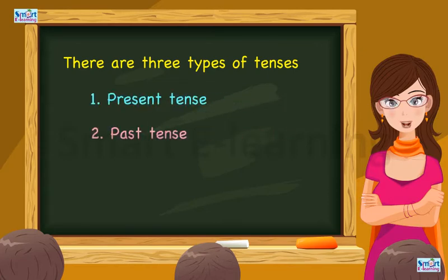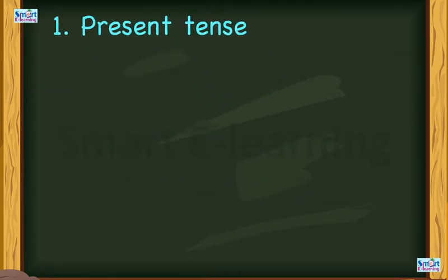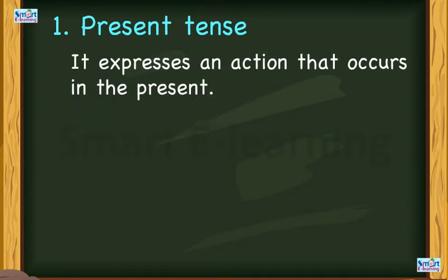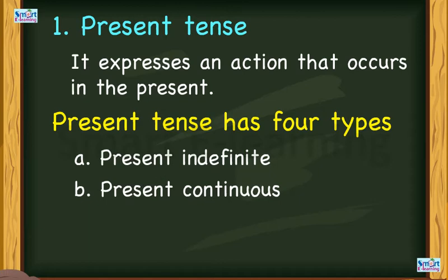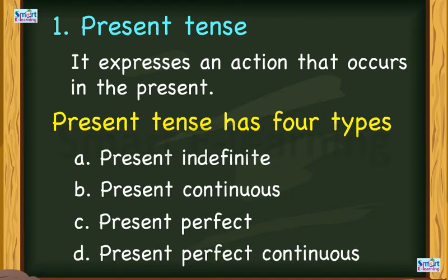There are three types of tenses: present tense, past tense, and future tense. Present tense expresses an action that occurs in the present. Present tense has four types: present indefinite, present continuous, present perfect, and present perfect continuous.